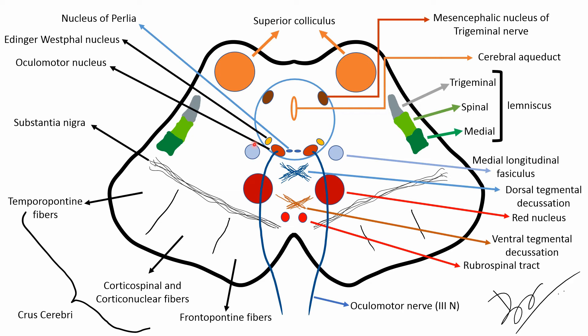As seen here, the oculomotor complex is in the periaqueductal gray, and adjacent to it are the Edinger-Westphal nucleus and the nucleus of Perlia.